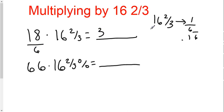Now because I'm treating 16 and two-thirds as 0.16 repeating, I need to add two zeros. So the answer is 300.